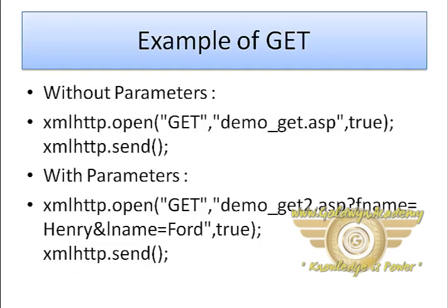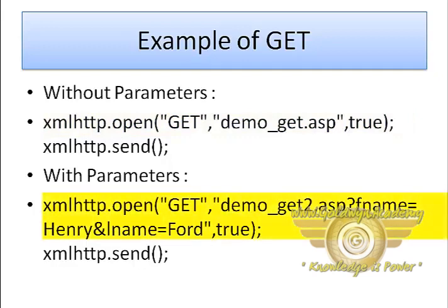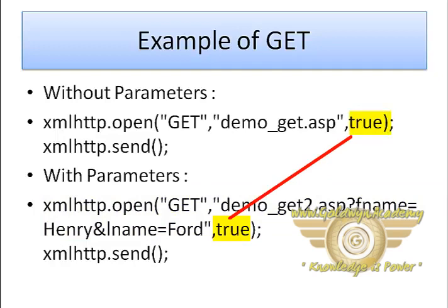This is an example of a GET method without a parameter — we simply open the URL and then send it. When the script accepts parameters, we use '?' for concatenation and '&' for multiple parameters before sending to the server. In both cases the third parameter is always set to true.